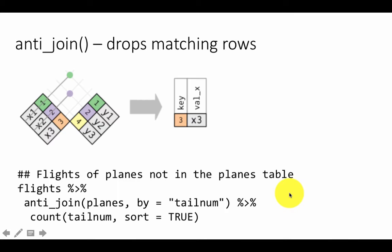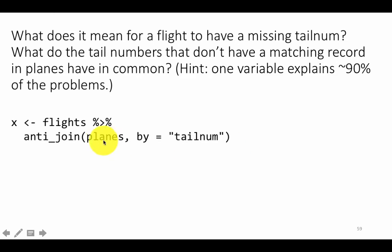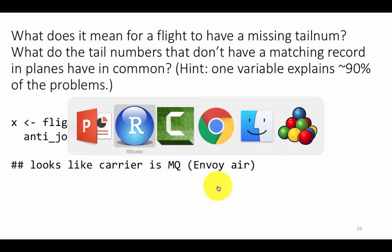When you do this, you will actually see that there are quite a few flights for which the planes don't even exist in the planes table. The question is: what does it mean for a flight to have a missing tailnum? Why do the tail numbers that don't have a matching record have in common? If you run this — where x is all the flights for which there is no matching tailnum — it looks like there's a carrier called MQ and another called AA which accounts for most of the results.